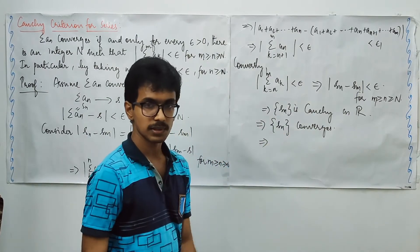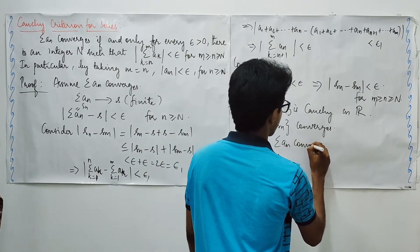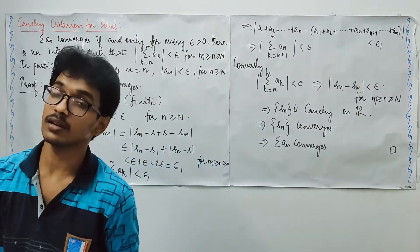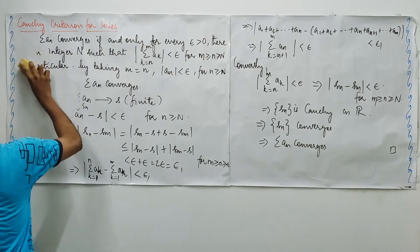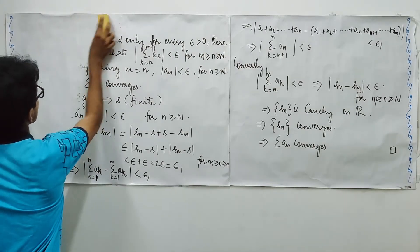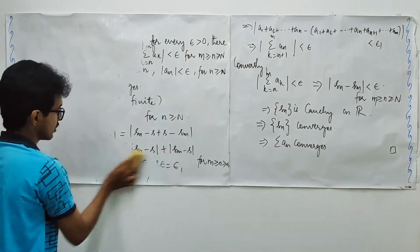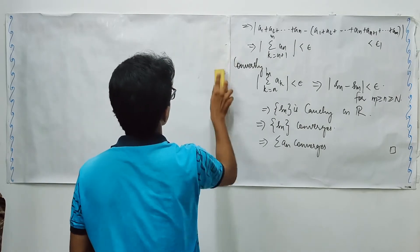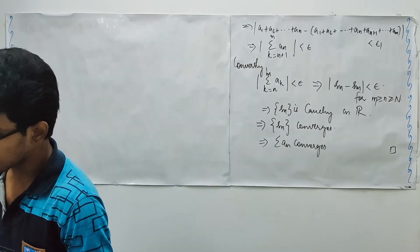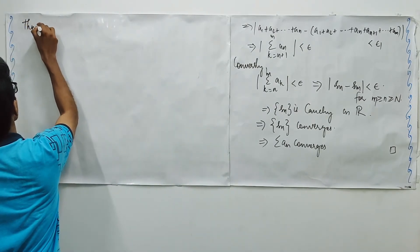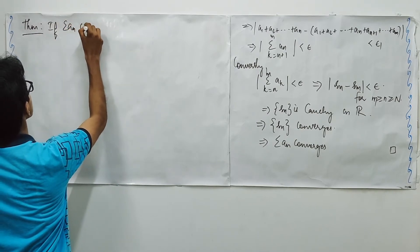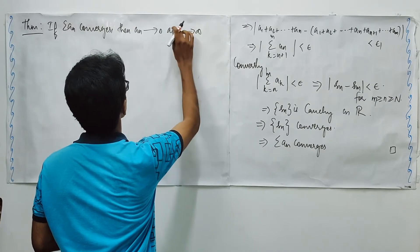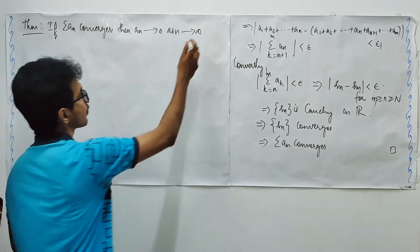We know that in R, every Cauchy sequence converges. Therefore, this implies s_n converges. So whenever the sequence of partial sums converge, it means the series converges. And this completes the proof. The next result that we are going to see is, if you have the series which is converging, then the nth term approaches 0 as n approaches infinity.